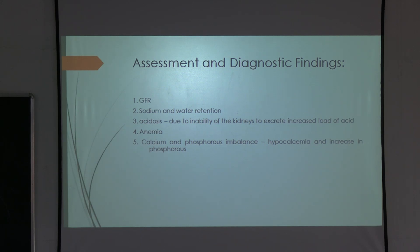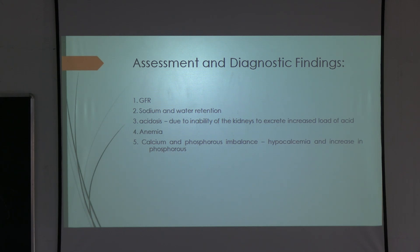Assessment of chronic renal failure includes measuring the glomerular filtration rate, which will be reduced as the kidneys are unable to perform proper functioning. Sodium and water retention can occur, leading to hypertension. Acidosis can occur because metabolic wastes accumulate. Anemia can occur because the kidneys secrete erythropoietin, which is reduced. Calcium and phosphorus imbalance occurs, with the patient presenting with hypocalcemia and elevated phosphorus.